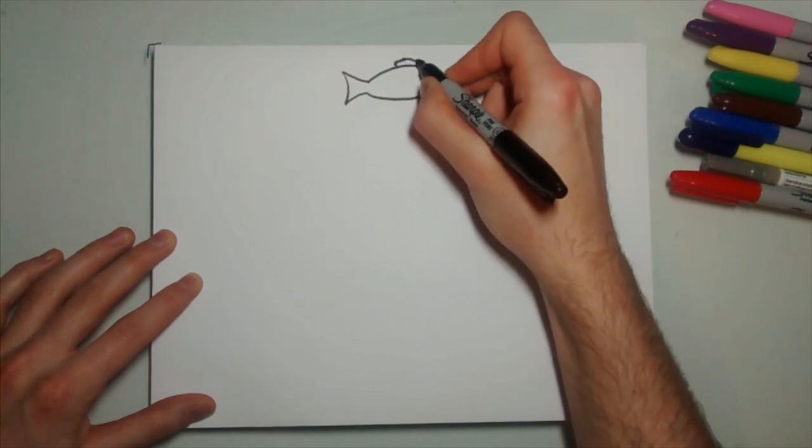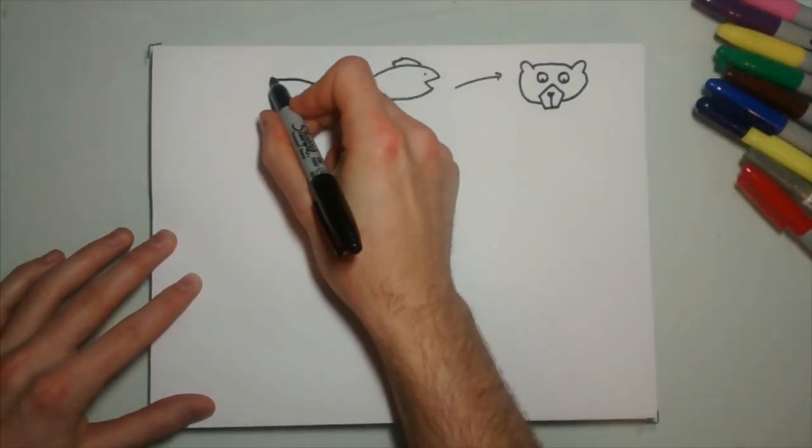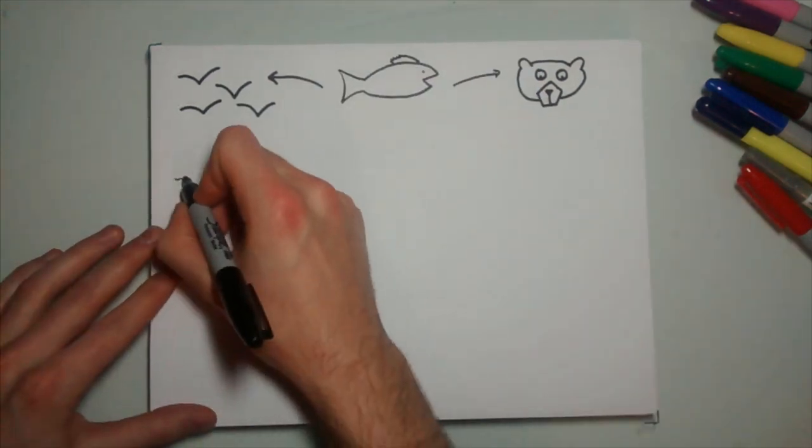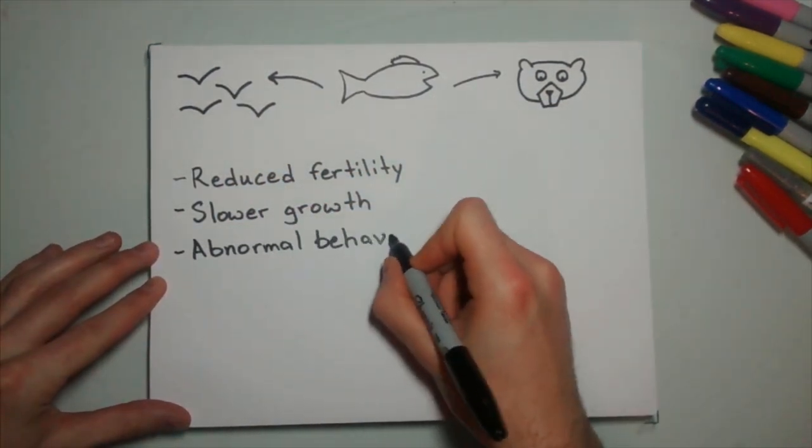Fish-eating birds and mammals accumulate more methylmercury. It has been found in eagles, otters, and bears. This exposure can induce reduced fertility, slower growth and development, abnormal behavior, and death.